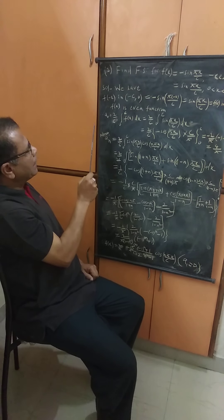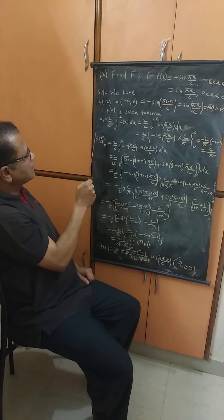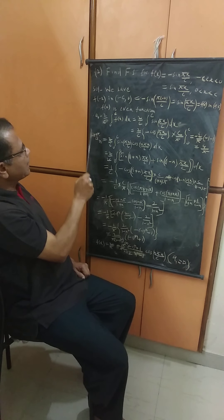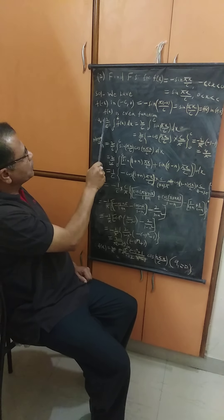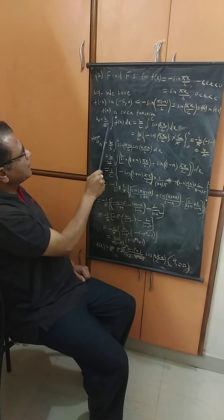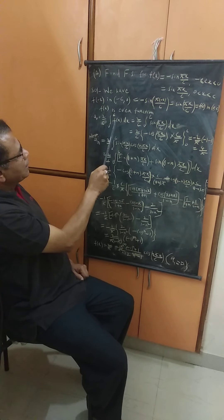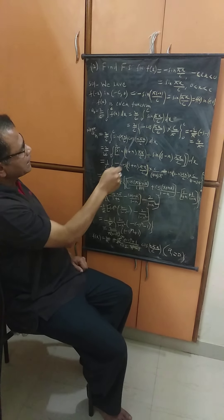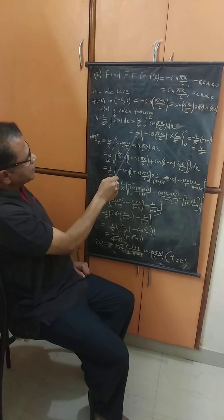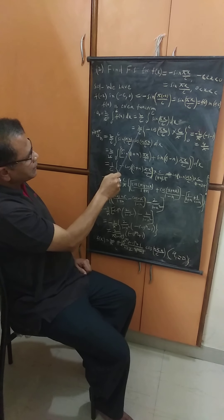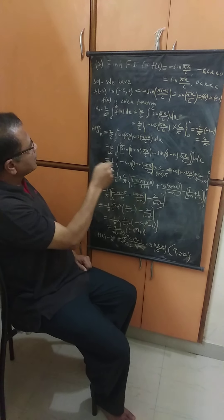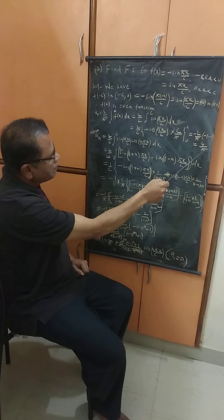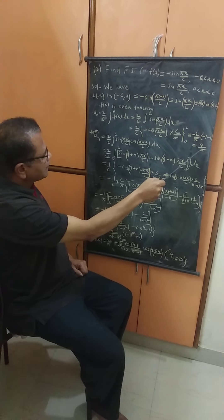As in the last example, we only need to find a0 and an. So a0 = (2/c) times the integral from 0 to c of f(x) dx, that is sin(πx/c) dx. After evaluation of this integral, we get a0 = 4/π.